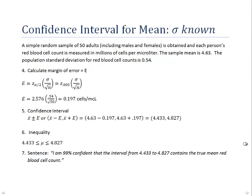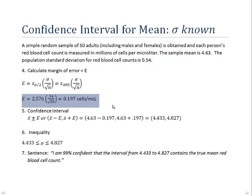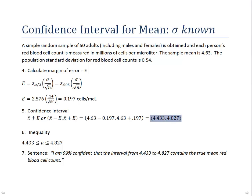With that information, we're ready to calculate the margin of error. Our formula for the margin of error uses the critical value Z at alpha over 2 equals 0.005, along with sigma and the square root of n. Substituting those values gives a margin of error E of 0.197 million cells per microliter. We combine the margin of error with the point estimate to create the confidence interval: x-bar plus or minus E, written as (x-bar minus E, x-bar plus E). Doing the arithmetic gives 4.433 to 4.827.